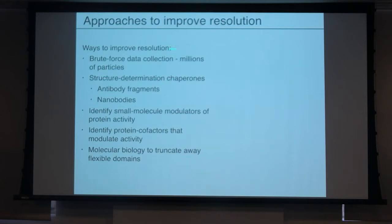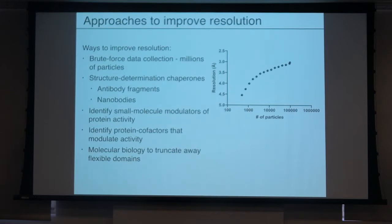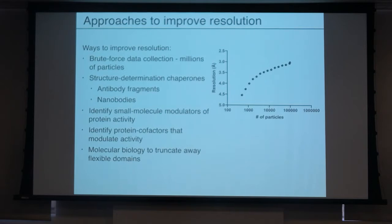Some of the ways we've used is just brute force data collection — millions of particles. Here's an example of a sub-100 kilodalton complex we work on, where with fewer than 1,000 particles we can get about a 4.7–4.6 angstrom structure. But as we start moving up into the hundreds of thousands of particles, we start getting closer to 3 angstroms. And we're still in the linear portion, so if we needed higher resolution, perhaps we could collect several million more particles. However, this is a logarithmic scale, and the jump from 1,000 to 10,000 particles is relatively straightforward, but going from 100,000 to a million, and from a million to 10 million, is where you start to really run into hardware limitations.